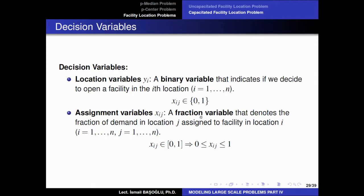Xij here represents the fraction of demand of customer J that will be assigned to facility location I. The customer's demand may be fractionalized, and each fraction may be assigned to a different facility due to capacity constraints. Therefore, we are not forcing assignment variables to be 0 or 1 — we enable a fractional value between 0 and 1 for Xij. When you have capacity constraints in the optimal solution, you may definitely end up with fractional values as well.